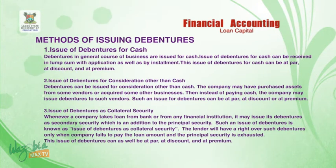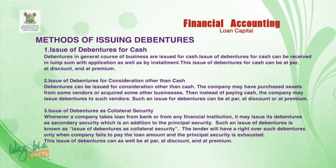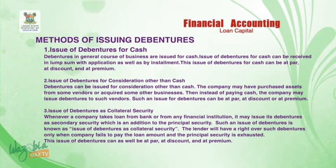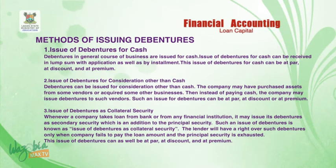Number two — issue of debentures for consideration other than cash. The company may have purchased assets from some vendors or acquired some other businesses; instead of paying cash, the company may issue debentures to such vendors. Such an issue of debentures can be at par, at discount, or at premium.